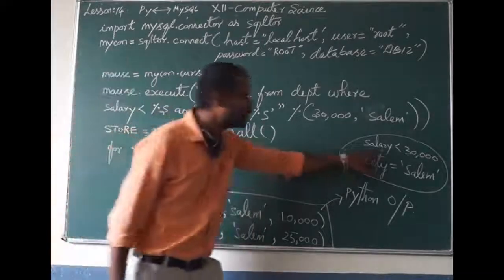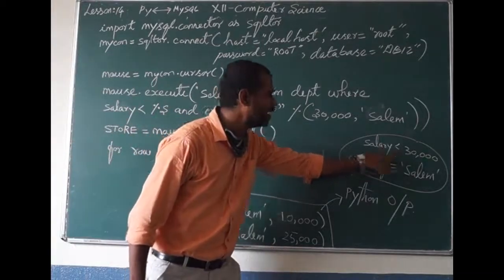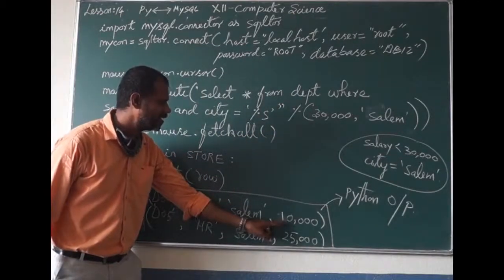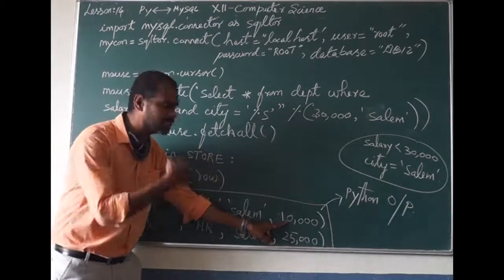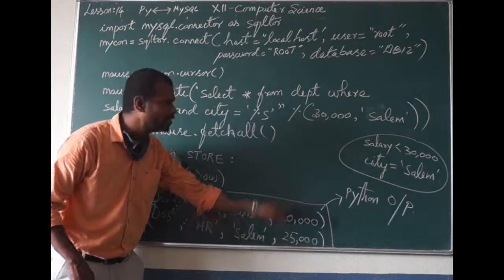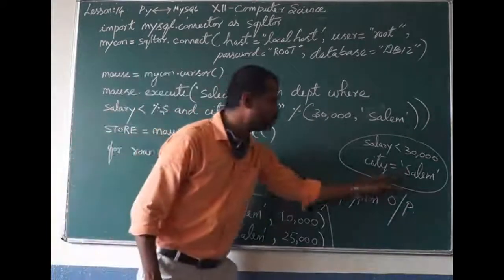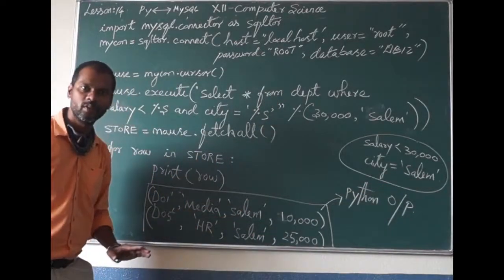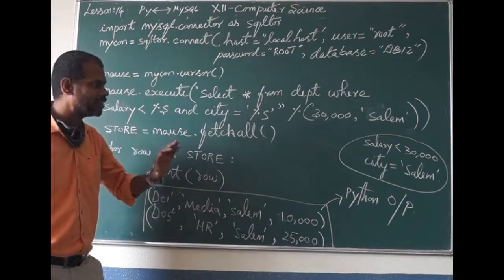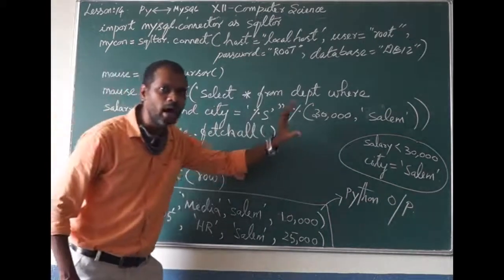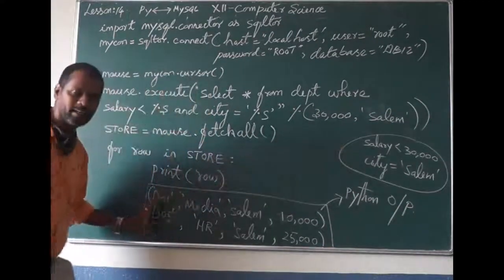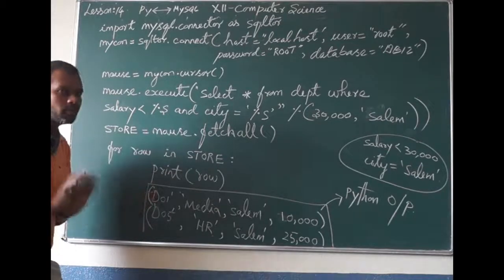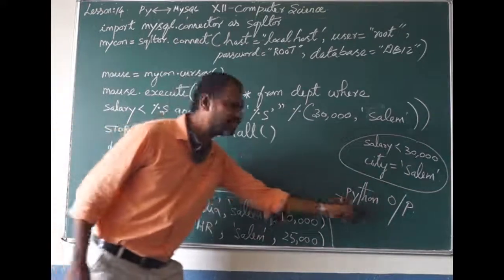The salary should be less than 30,000 — you can see salaries of 10,000 and 25,000, both below that. And the city should be Salem — here you can see the city is Salem in both records. Both conditions are satisfied, and that is the output from Python.